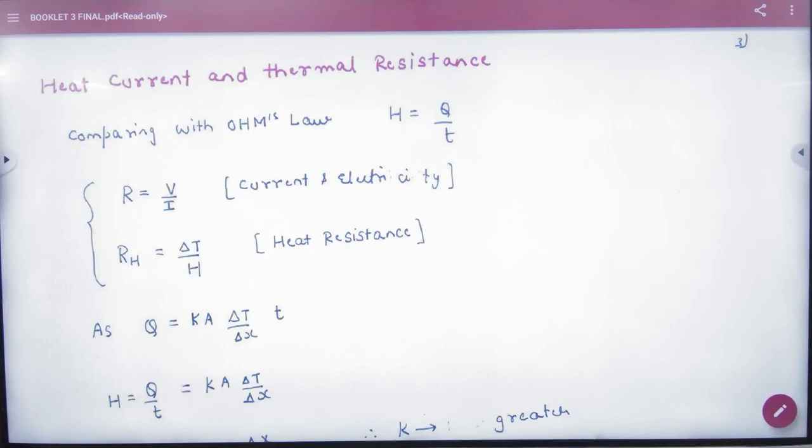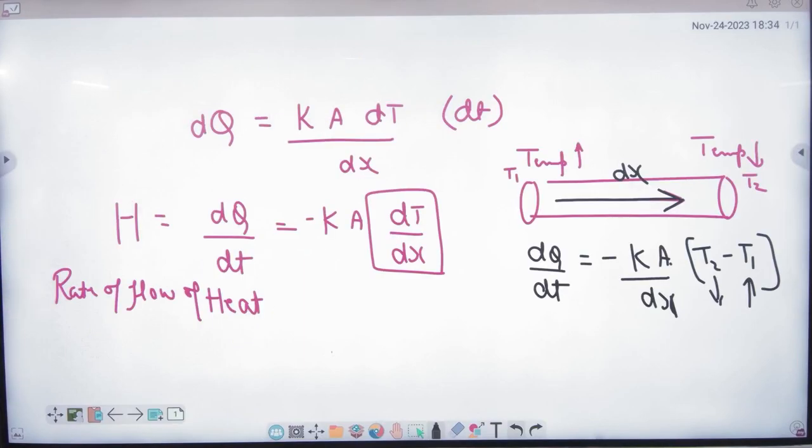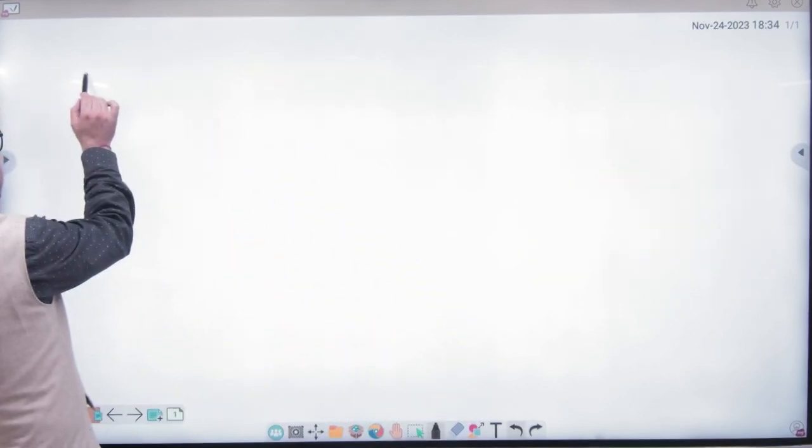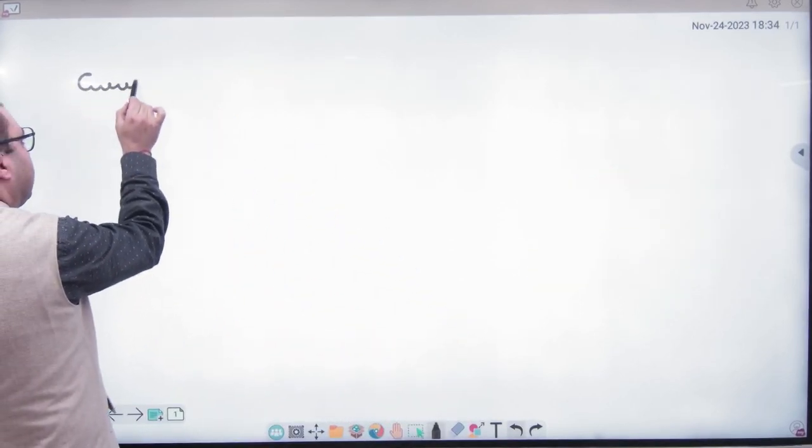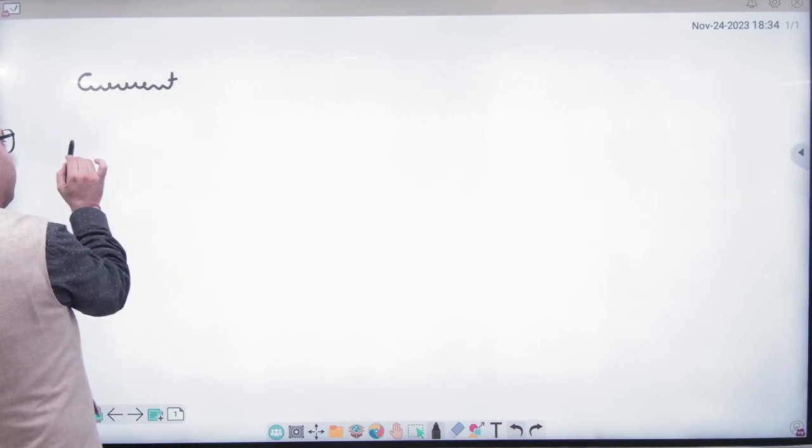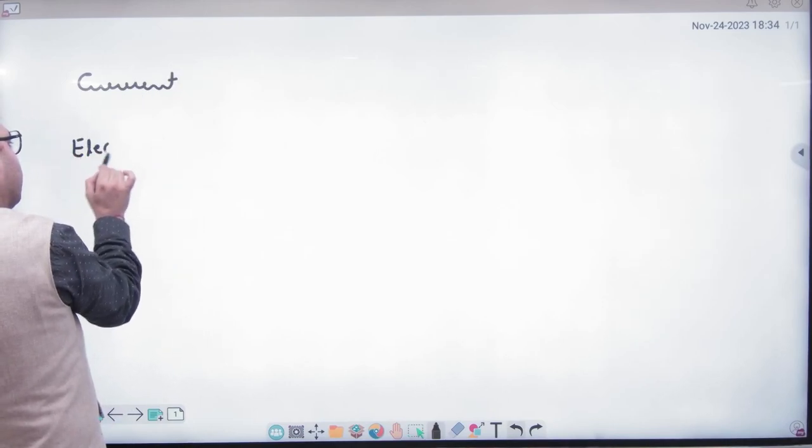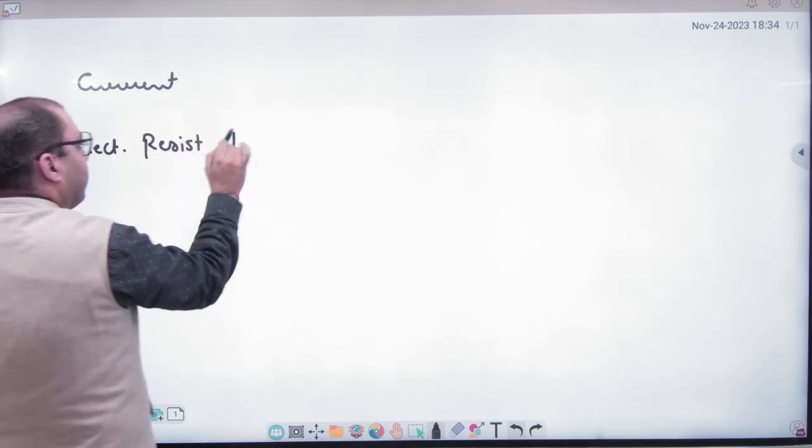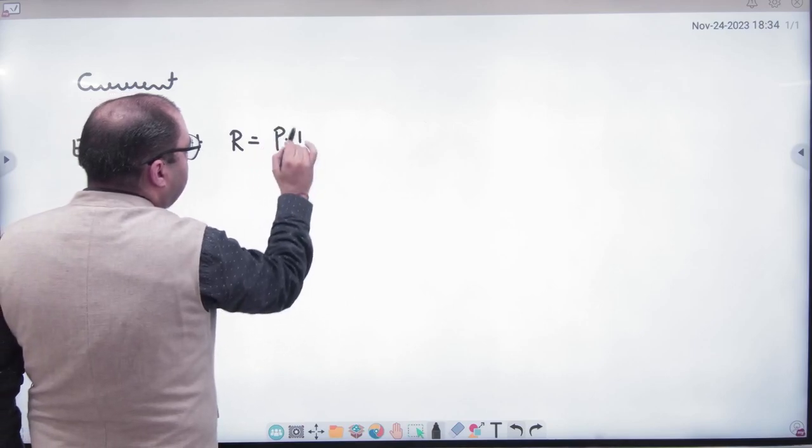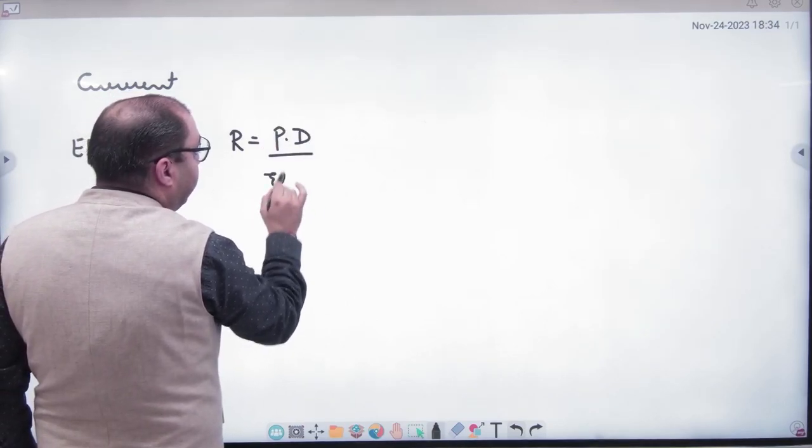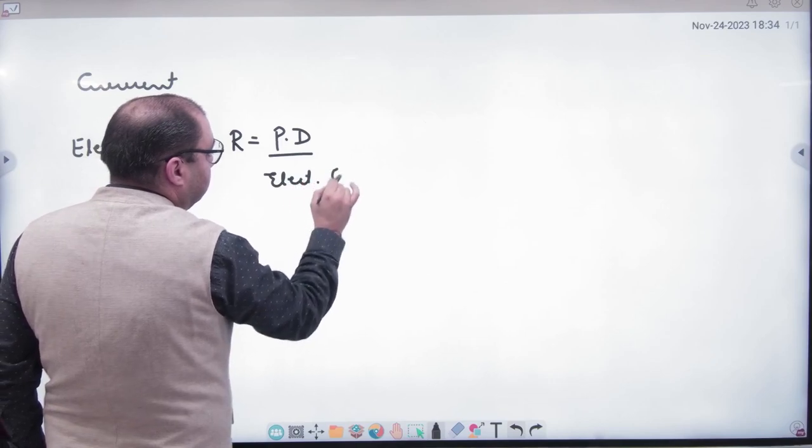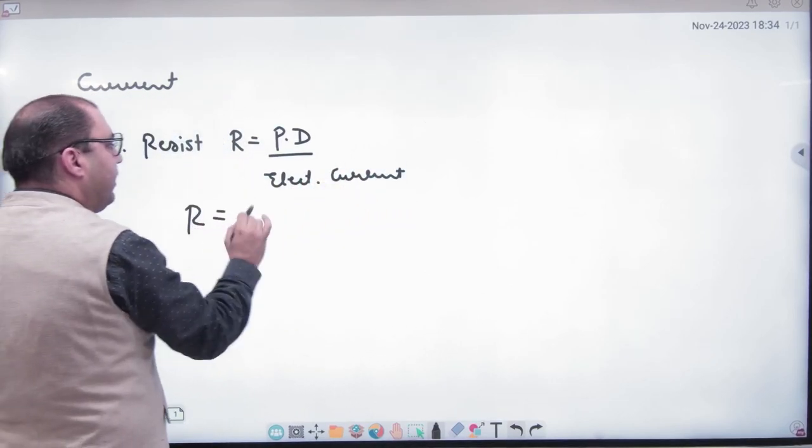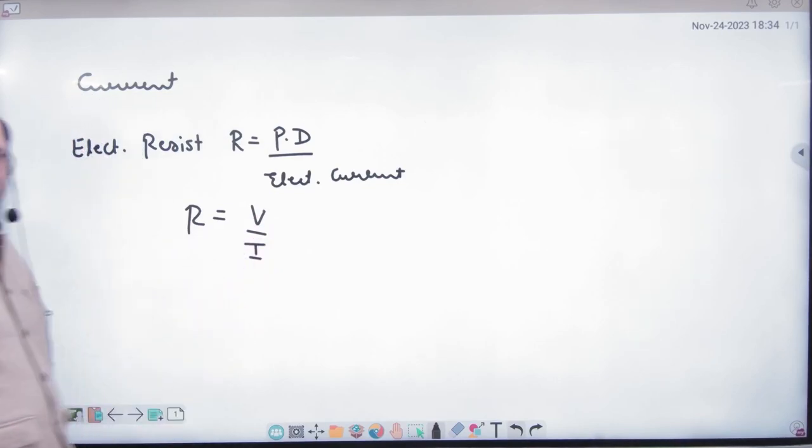In heat current and thermal resistance, I will explain it like this. Suppose if I remember current and electricity, then you had a topic of electrical resistance. R which was potential difference divided by electric current. R is equal to V by I, or V is equal to IR, R is equal to V by I.